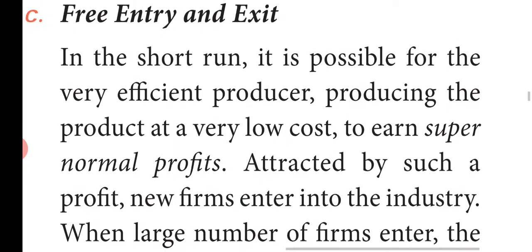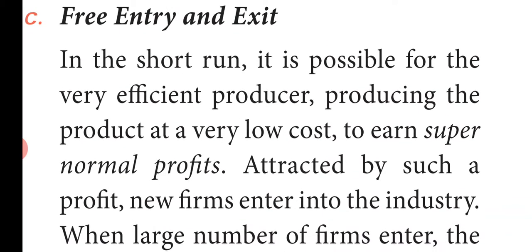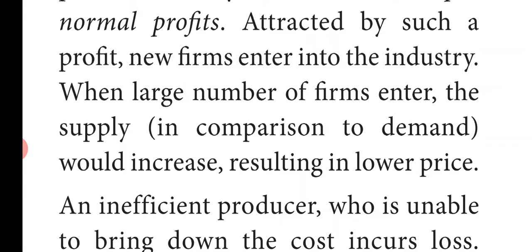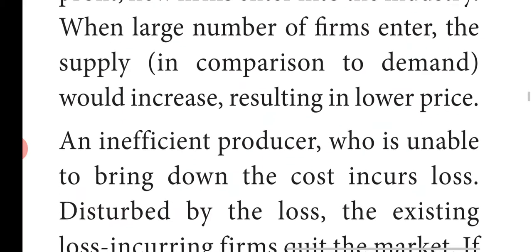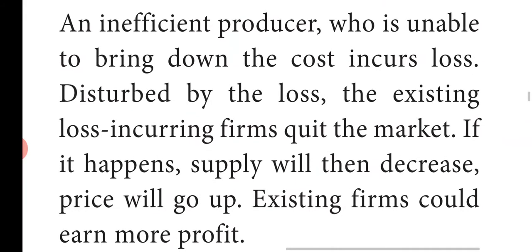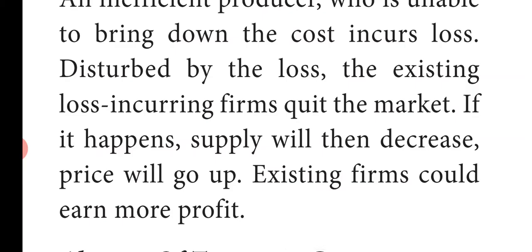Feature 3: Free entry and exit. In the short term, it is possible for a very efficient producer producing at a very low cost to gain supernormal profit. Attracted by such profit, new firms enter the industry. When a large number of firms enter, supply increases, resulting in a lower price. An inefficient producer who is unable to bring down costs incurs a loss. Disturbed by the loss, the loss-incurring firm quits the market. If that happens, supply decreases, price goes up, and the exiting firm could gain more profit.